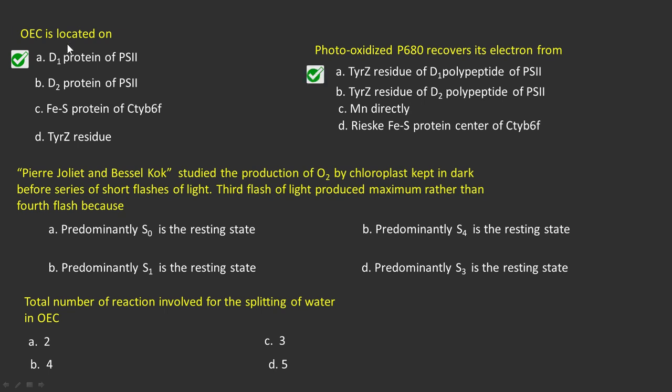Second question: that is the tyrosine residue of D1 polypeptide of PS2. Joliot and Kok interpreted that S1 was the resting state, that's why third flash was producing maximum oxygen. The total number of the reactions involved for the splitting of water is 5.